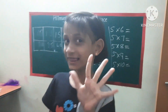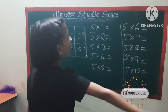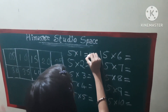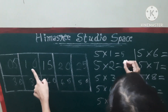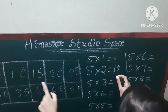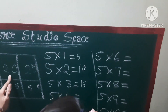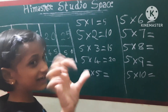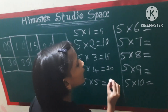Here we will go, the 5 times table. So, let's write it down. 5, 1's are 5. 5, 2's are 10. 5, 3's are 15. 5, 4's are 20. 5, 5's are 25.